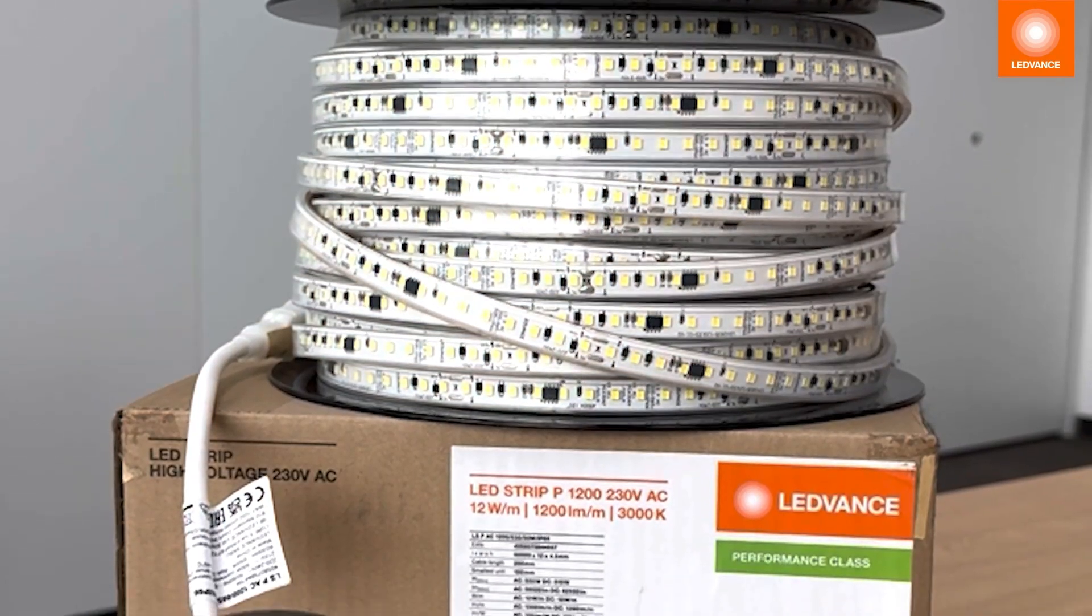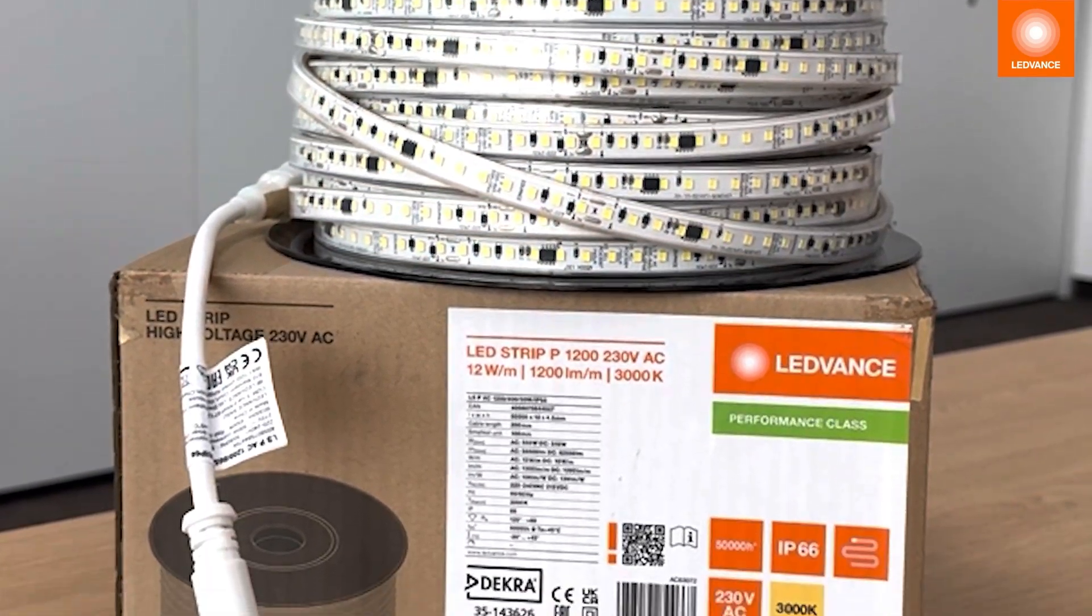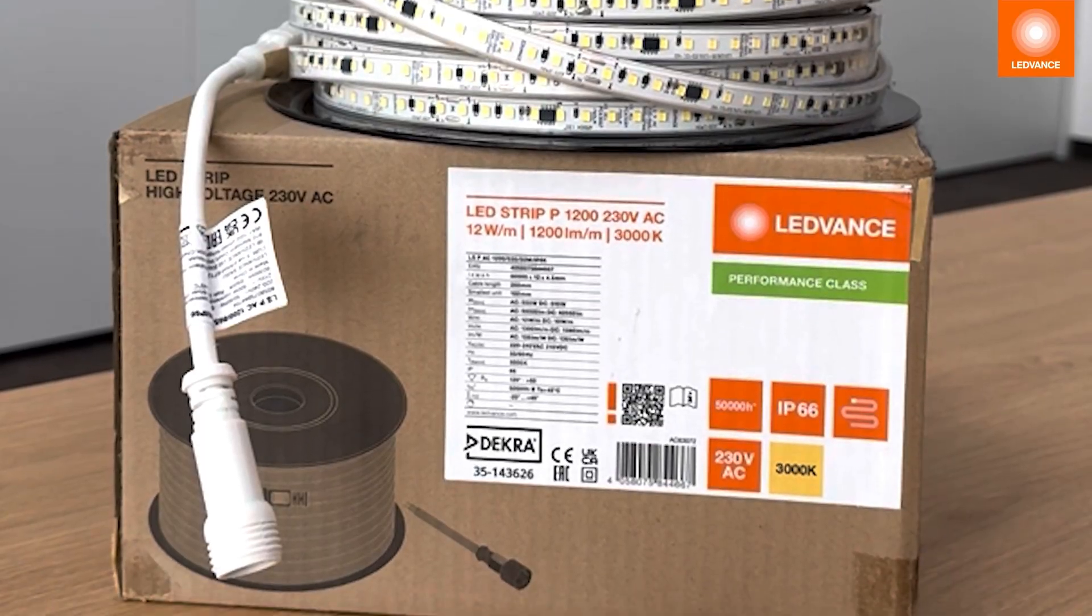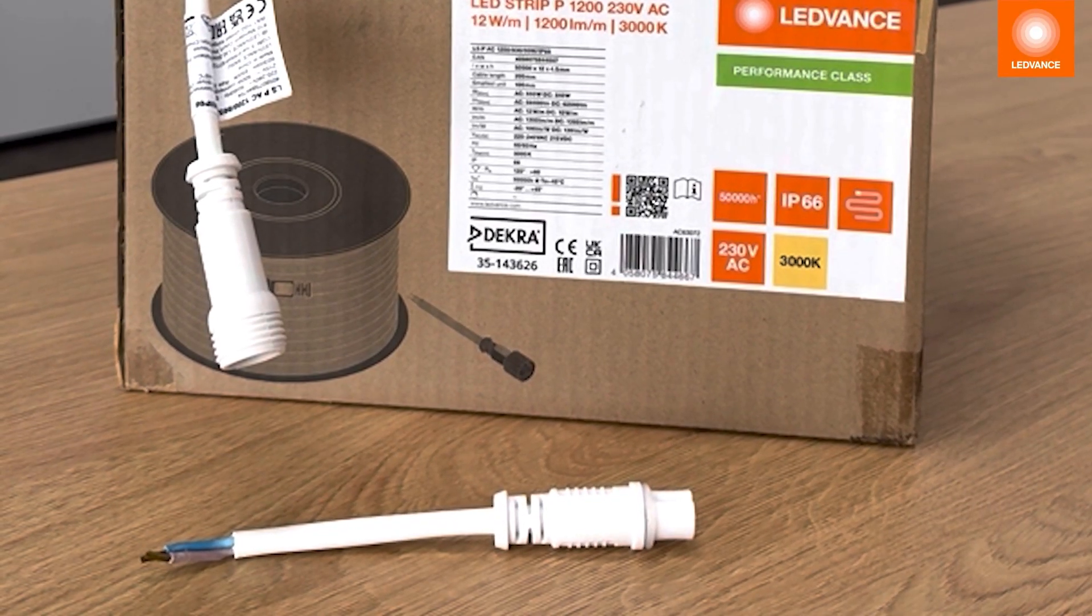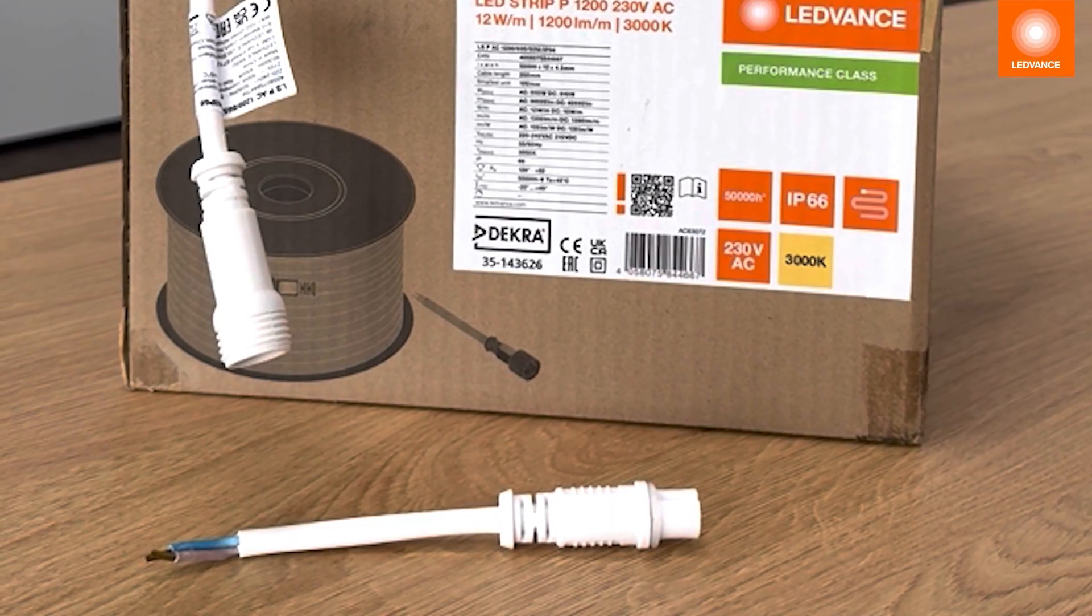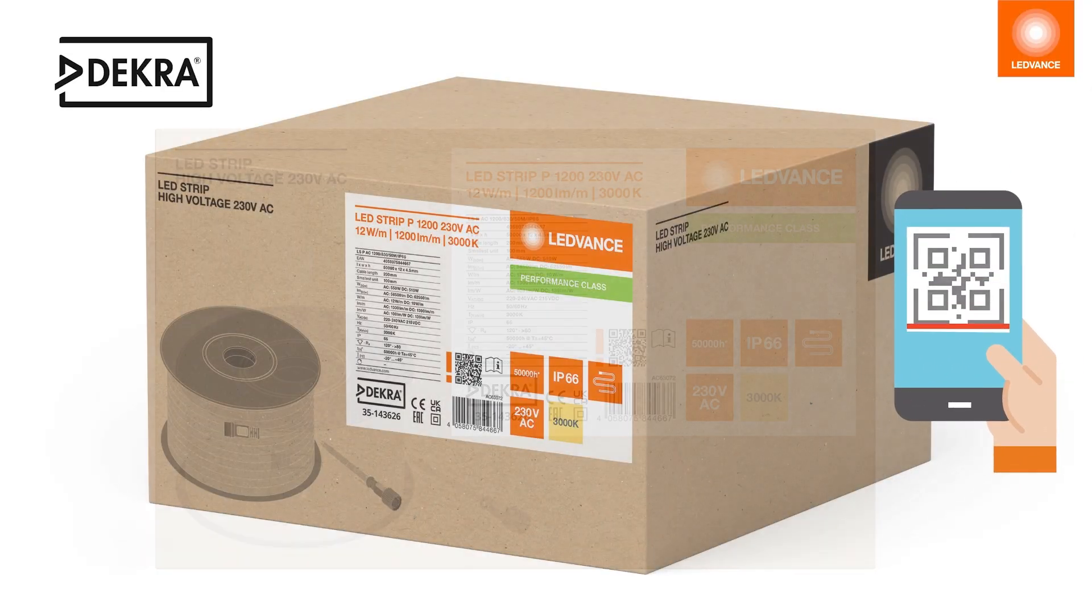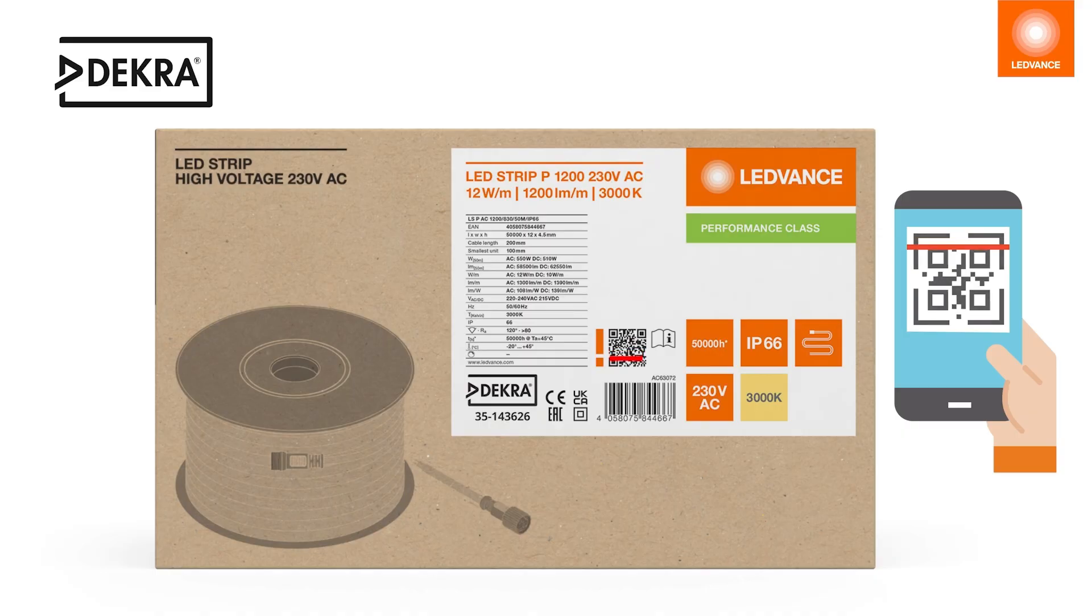When opening the carton box you will find LED strip 230 volt on reel with connector parts with blank wires for 230 volt power supply. Please follow the user instruction available by scanning the QR code.